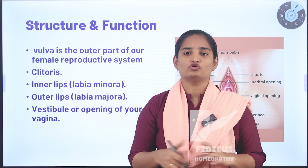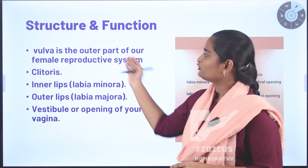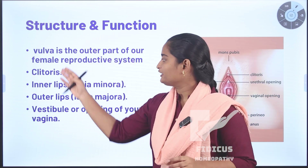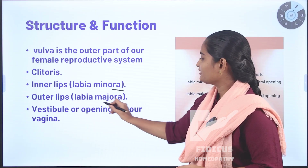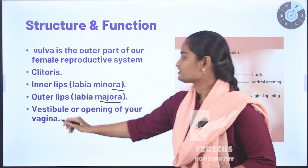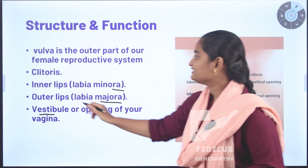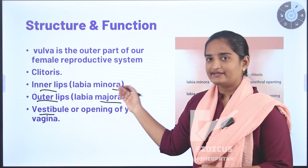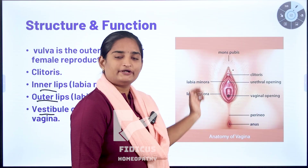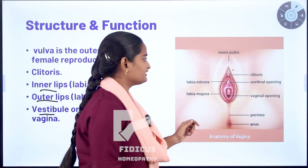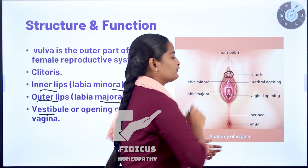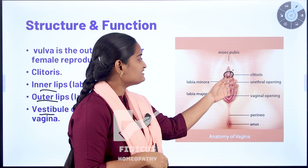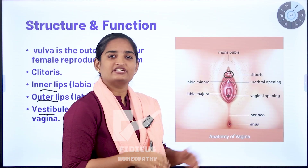Now coming to the structure and function of the vulva. The vulva is the outer part of the female reproductive system. It consists of the clitoris, labia minora, labia majora, and the vestibule. This is the external reproductive system. This part is the clitoris — the most sensitive part — and it helps with sexual arousal and response.